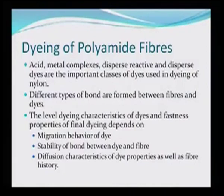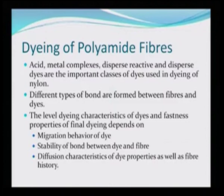We have to concentrate on the dyes that can be used for polyamide fiber dyeing. Acid dyes, metal complexes, disperse reactive dyes, and disperse dyes are the only important classes. Different types of bonds are formed between fiber and dyes. The level dyeing characteristic and fastness properties of final dyeing depend on the migration behavior of the dye, stability of the bond between dye and fiber, and diffusion characteristics of the dye as well as fiber history.